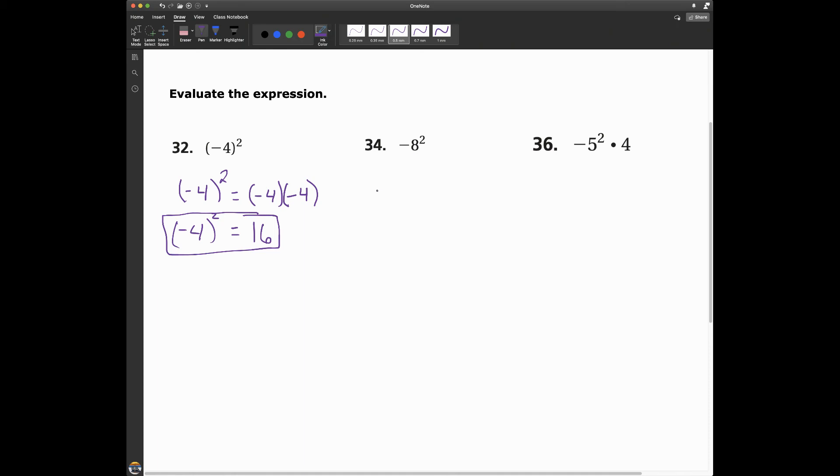Now that's different. If I look at this problem, it's negative 8 to the second power. There are no parentheses here, so this negative sign is not included. Here, the negative sign was included because it's in the parentheses. Another way I can think about this problem is writing the negative, and then I could put 8 to the second power. So this is negative, and then I have 8 times 8, which is 64. So negative 8 to the second power equals negative 64. Sometimes students get a little confused on this, and it's just going to take some practice.